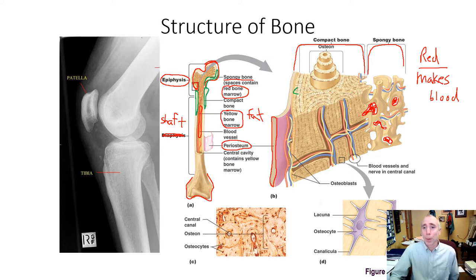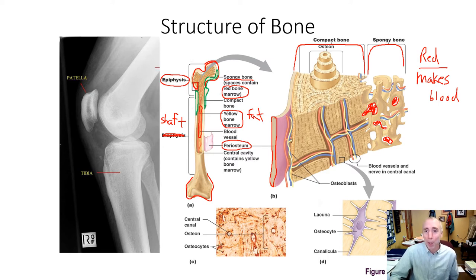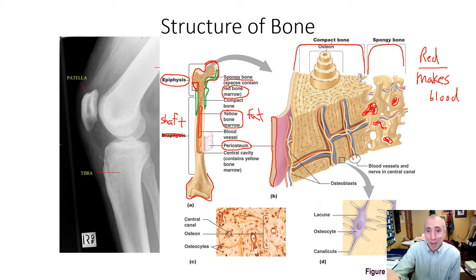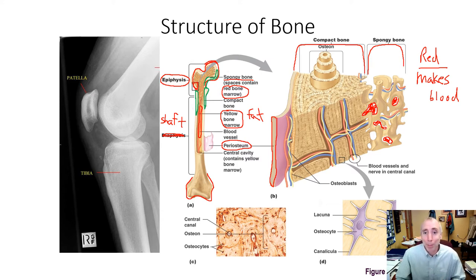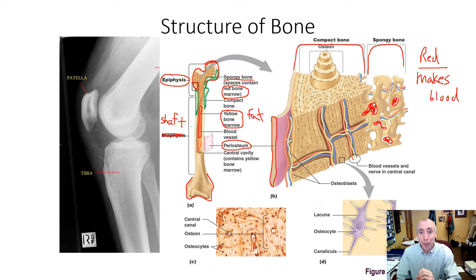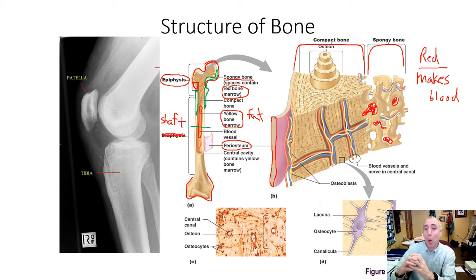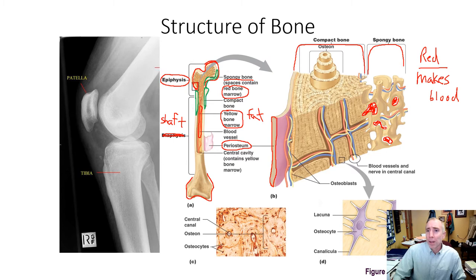Compact bone has no air spaces — no spaces at all between individual bone cells — so it's stronger than spongy bone. It makes sense that it surrounds the less-strong spongy bone and the central cavity of the shaft. If you were to cross-section the shaft and hollow it out, it would basically be a hollow pipe, and the walls of that pipe are made of compact bone.